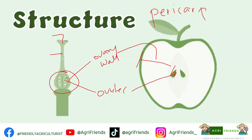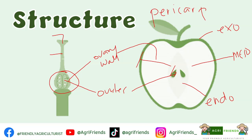The pericarp is further divided into three layers. The exocarp, which is the outermost layer. The mesocarp is the middle layer, and the endocarp is the innermost layer. The thickness of these layers varies depending on the type and species of the fruit.